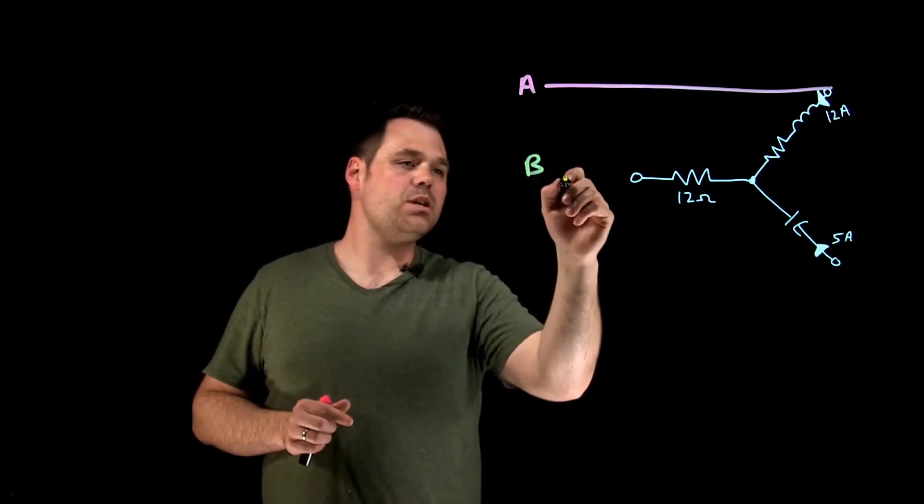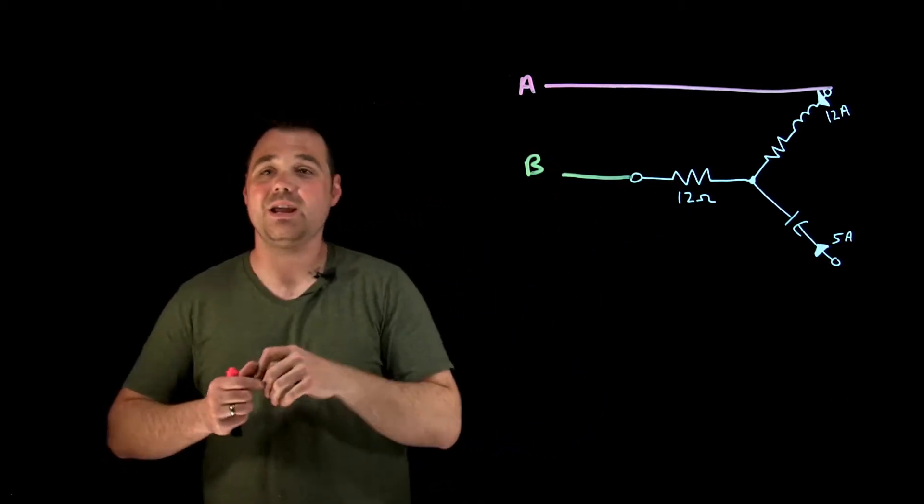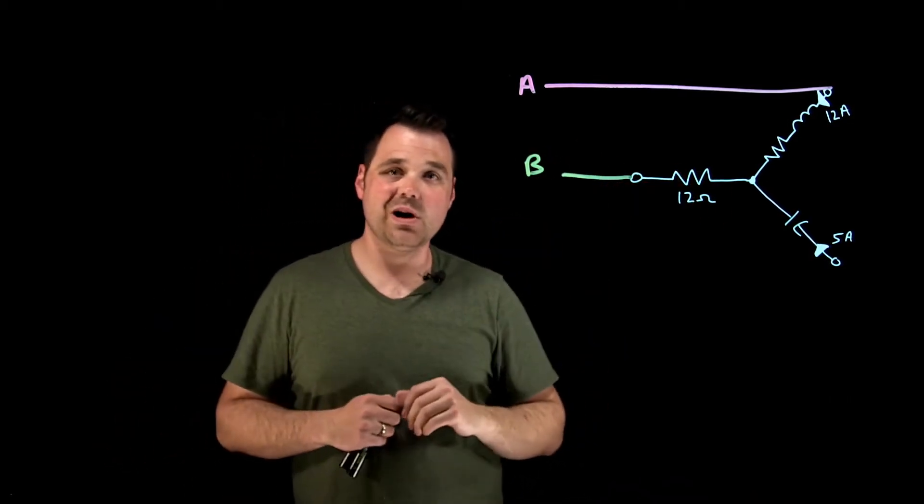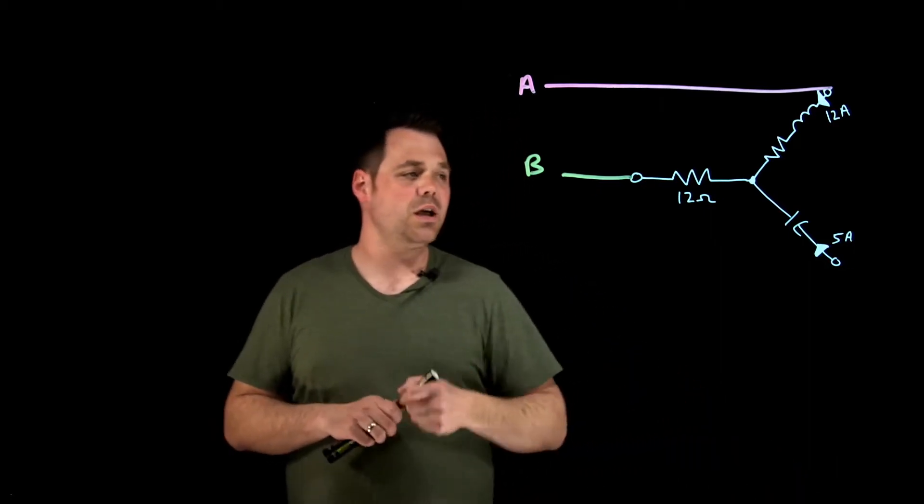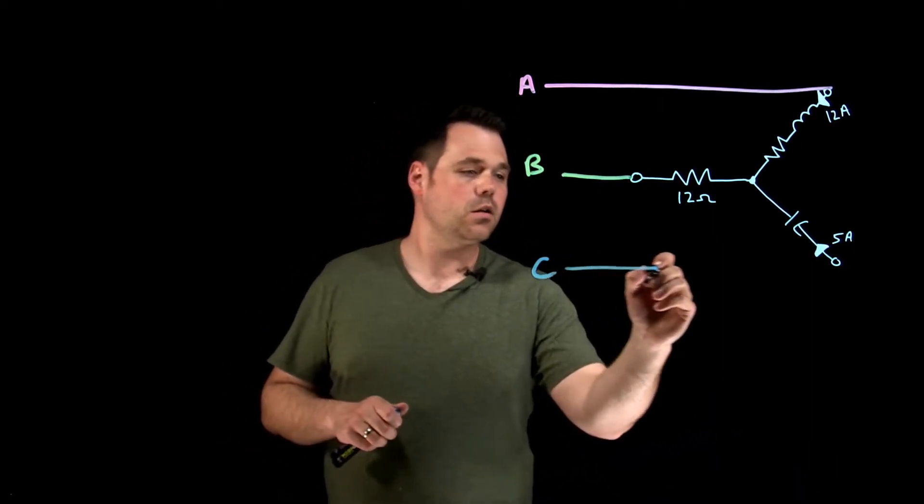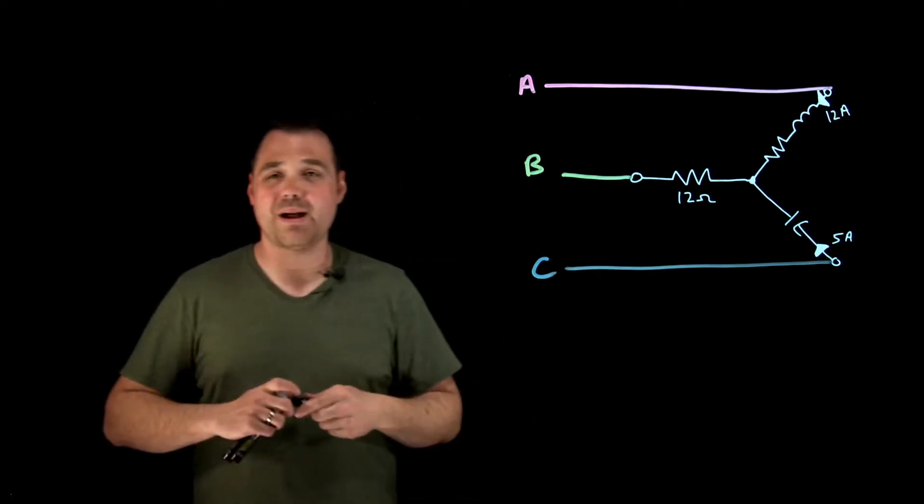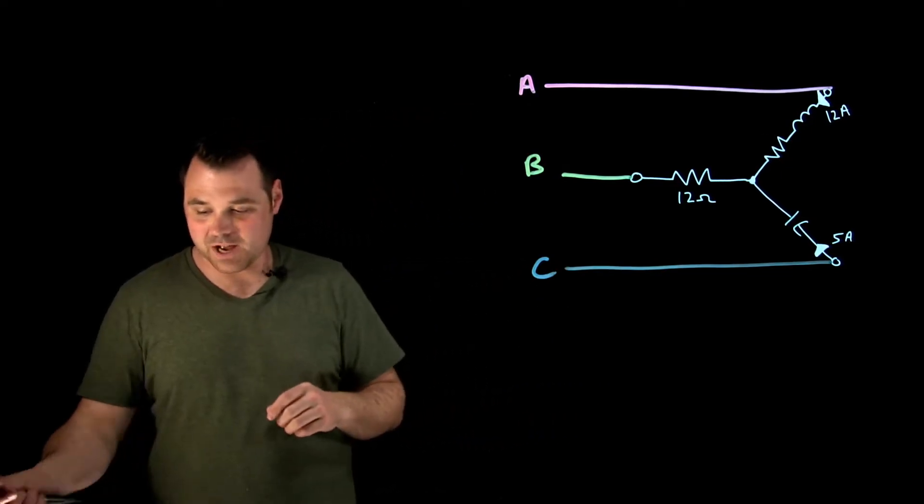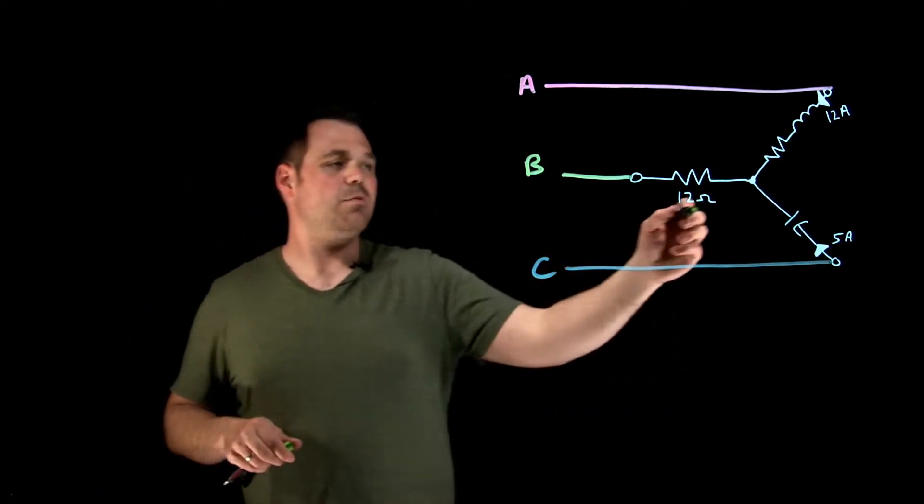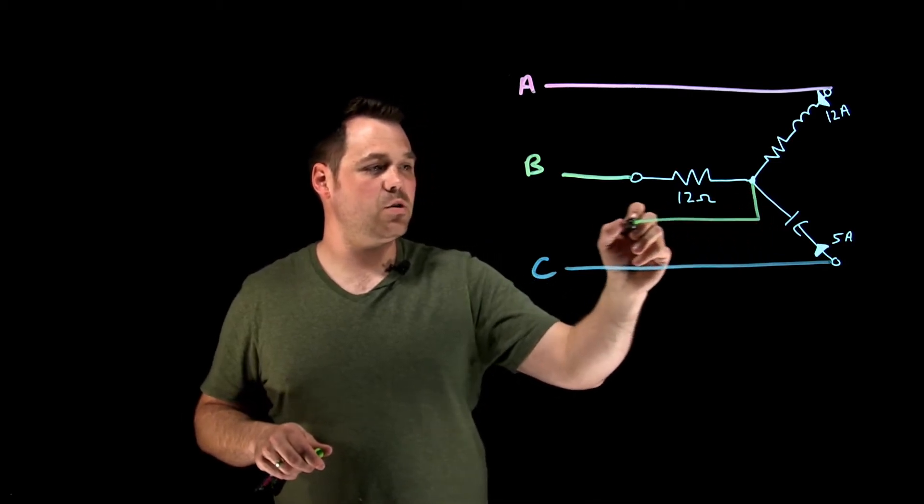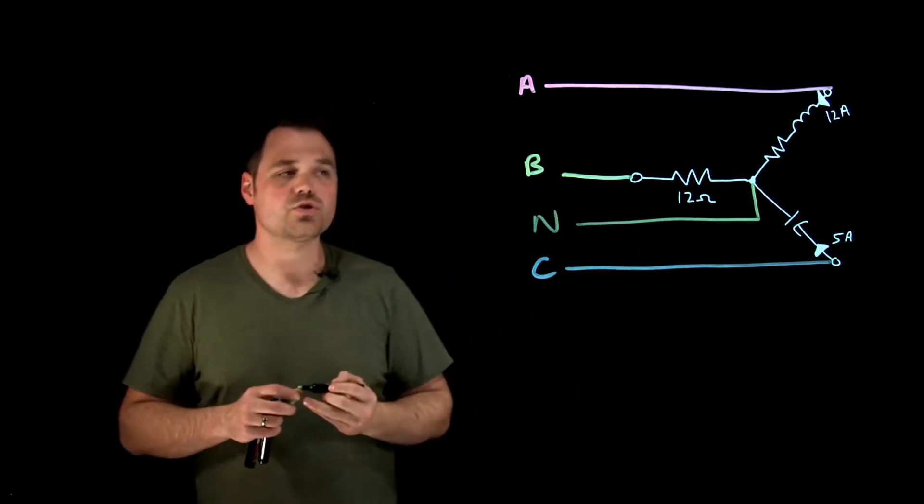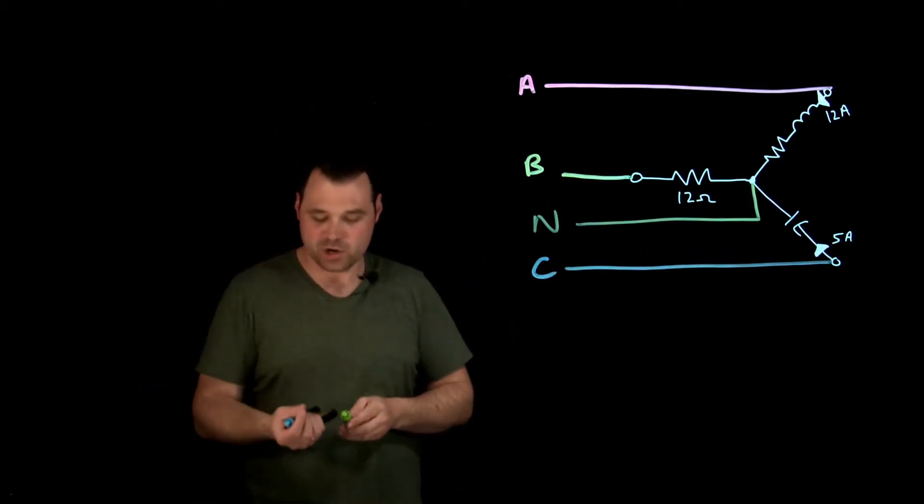We'll say this is B, line B connected to a resistor of 12 ohms of resistance. And we'll say C is connected to that capacitor, which draws five amps, which then we would, of course, in an unbalanced load require that neutral conductor. So we connect up that neutral conductor.